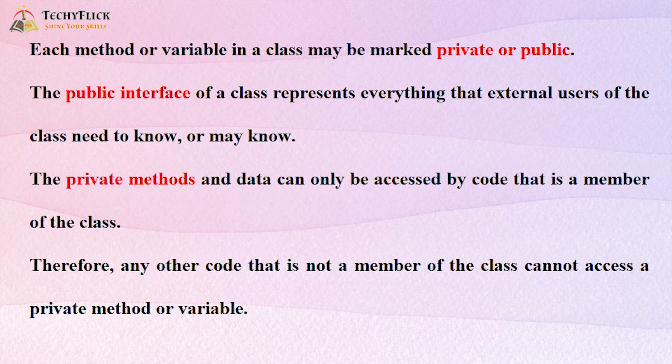The public interface of a class represents everything that external users of the class need to know or may know. The private methods and data can only be accessed by code that is a member of the class. Therefore, any other code that is not a member of the class cannot access a private method or variable.